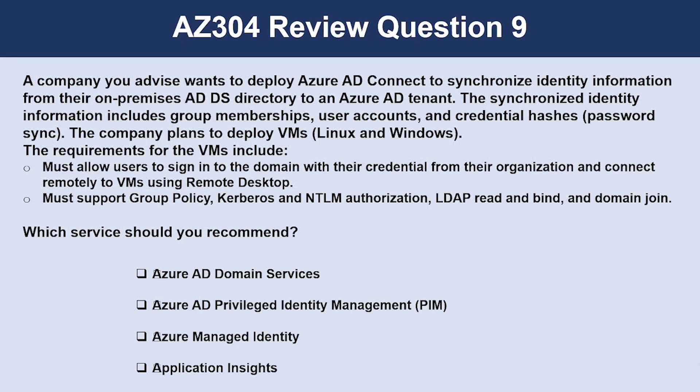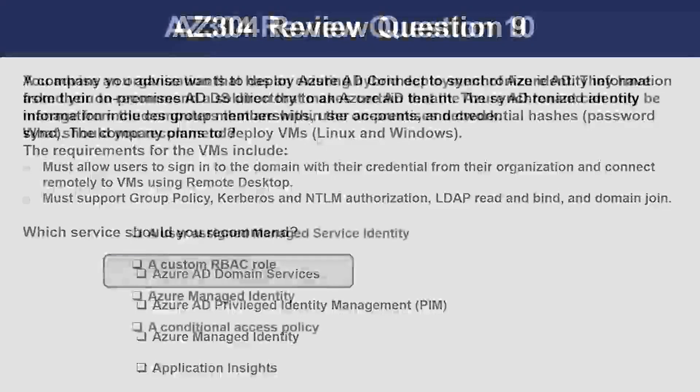Question number nine. A company wants to deploy Azure AD Connect to synchronize identity information from their on-premises ADDS directory to an Azure AD tenant. The synchronized information includes group membership, user accounts, and credential hashes, which is password sync. The company plans to deploy VMs, including both Linux and Windows machines. The requirements include allowing users to sign into the domain with their organizational credentials and connect remotely. The correct answer is Azure AD Domain Services. Azure AD Domain Services supports LDAP, NTLM, and group policies that fulfill the requirement.